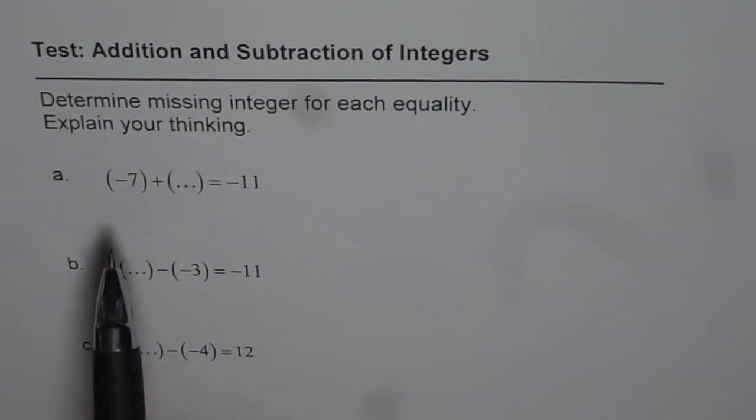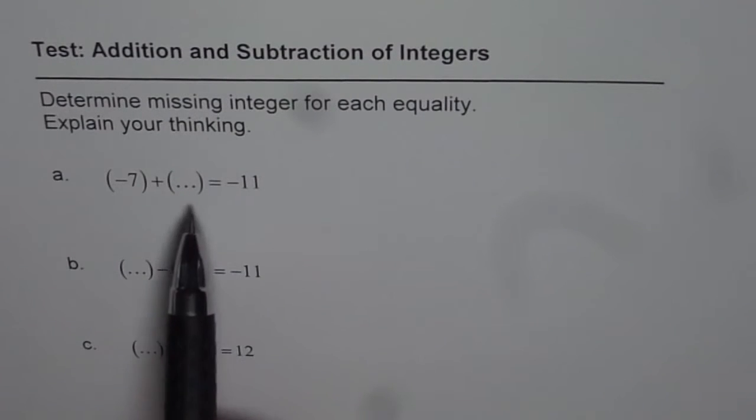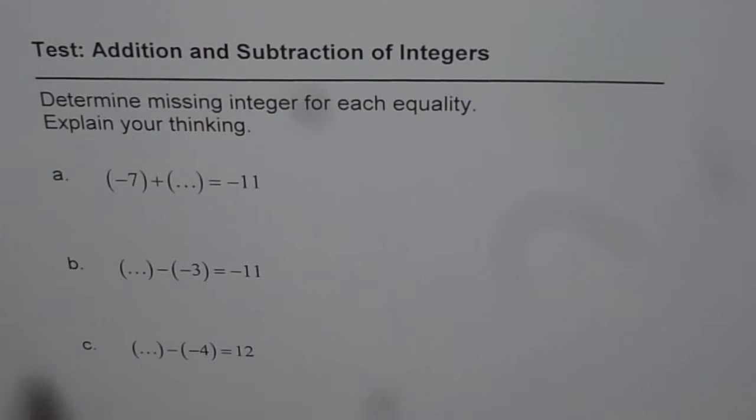So we have three questions here. You need to find these missing integers. The first one is: minus 7 plus what is minus 11? You need to fill this in. The second one is: when you take away minus 3 from a number, you get minus 11. Find that number.